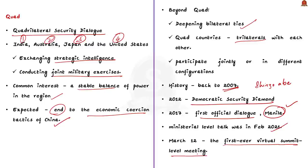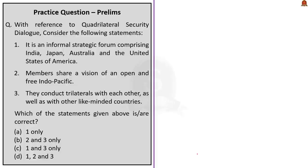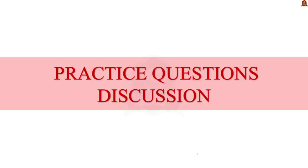Quad has evolved from a loose coalition of democracies to a concrete entity that has met thrice since 2019 at ministerial levels. The last ministerial level talk was in February 2021, and recently on March 12, the leaders of the four Quad nations met digitally for the first ever virtual summit-level meeting.